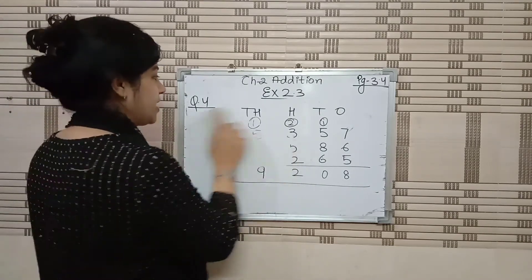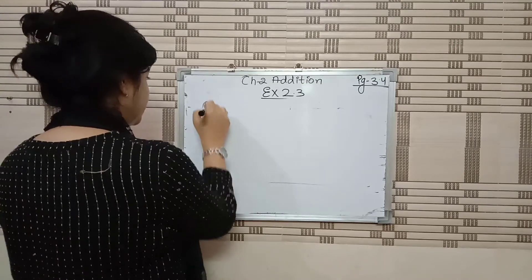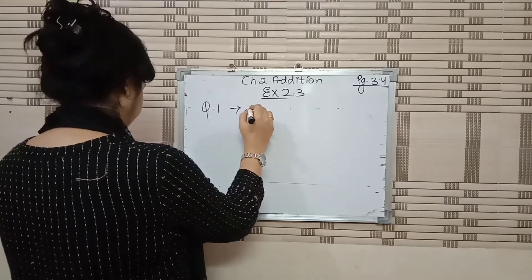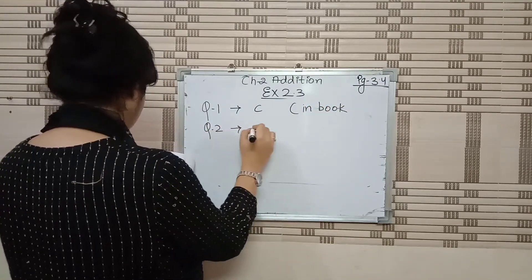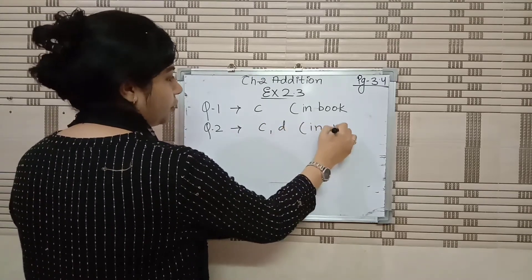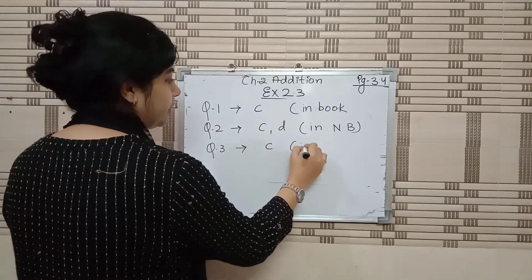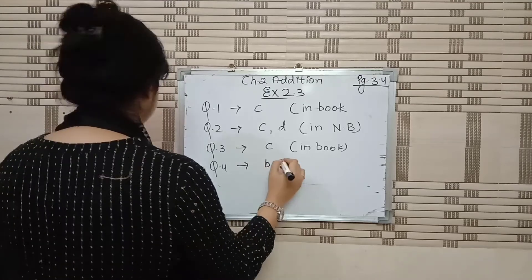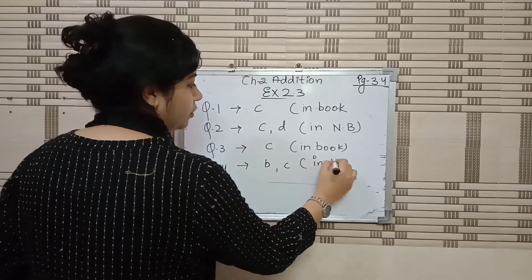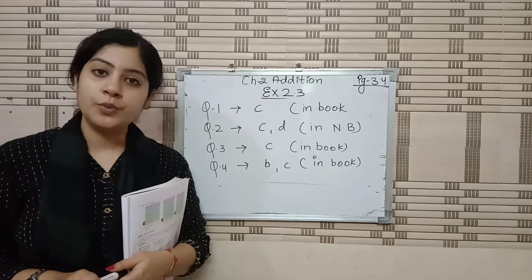Now I am writing the homework. Please note it down. Exercise 2.3: Question 1 C part — do it in book only. Question 2 C and D — do it in notebook. Question 3 C part — do it in book only. Question 4 B and C — do it in book only. So only question 2 goes in the notebook; the rest you do in the book. I hope you all understand. Try to do it by yourself. Thank you.